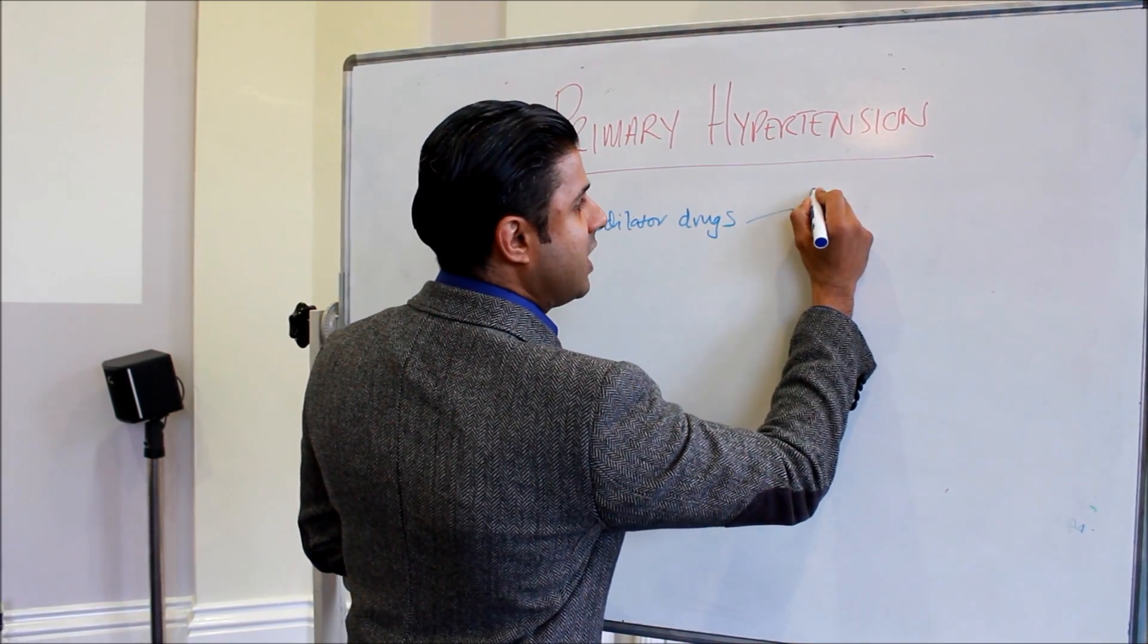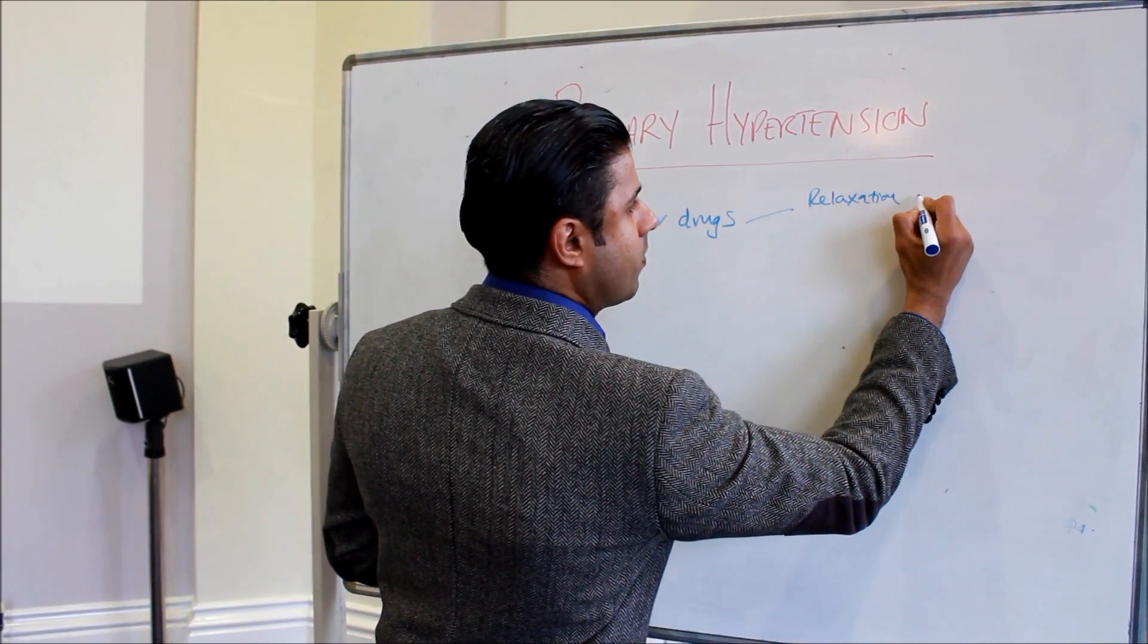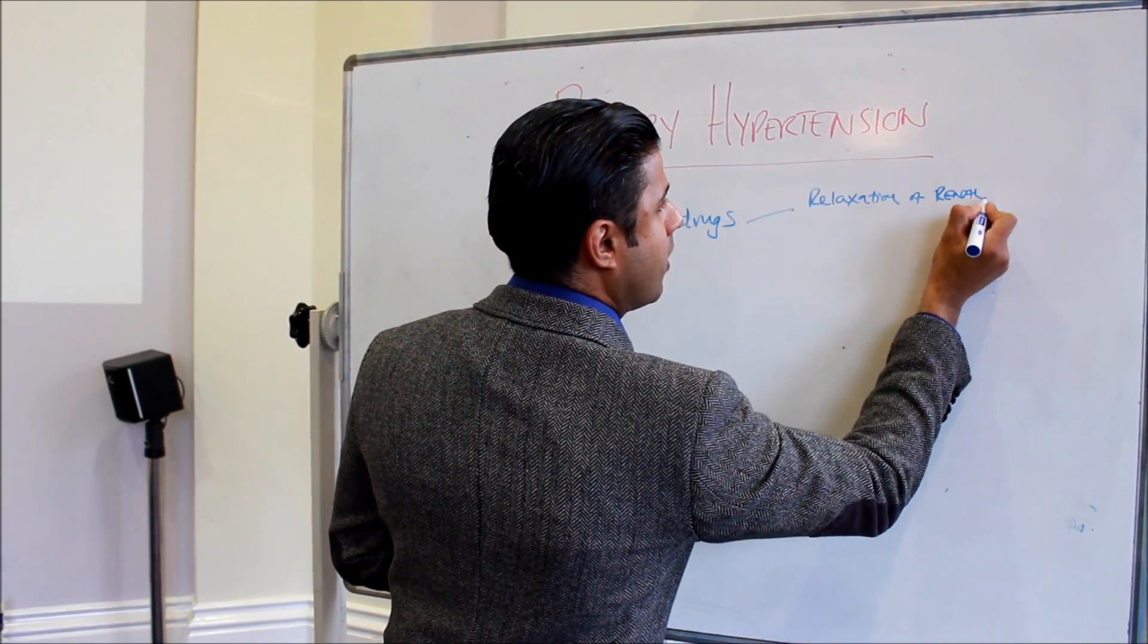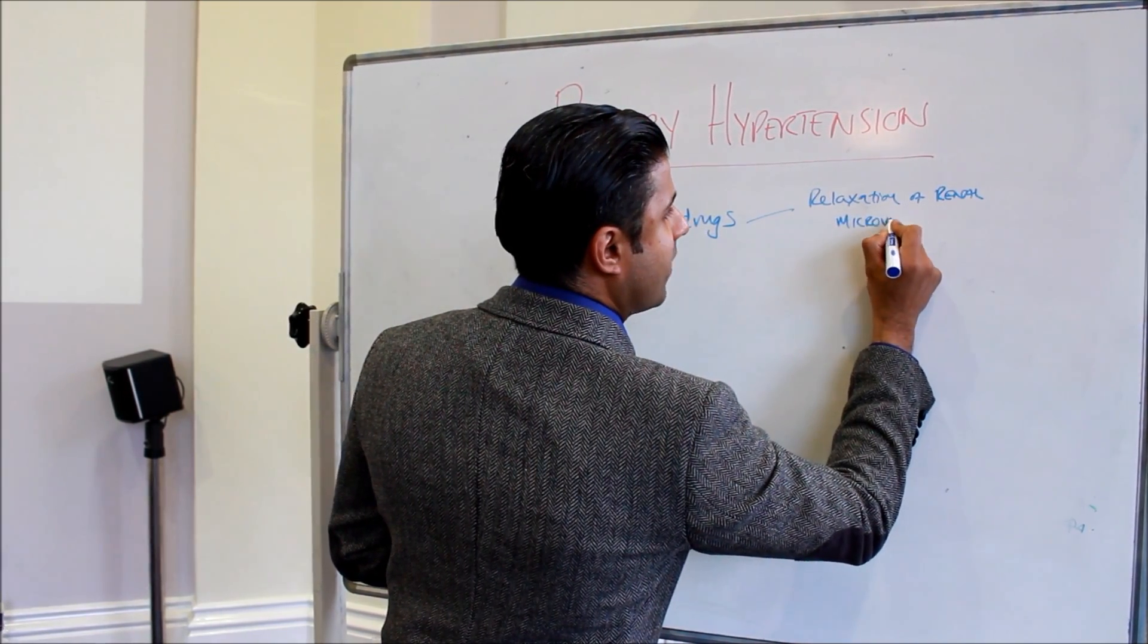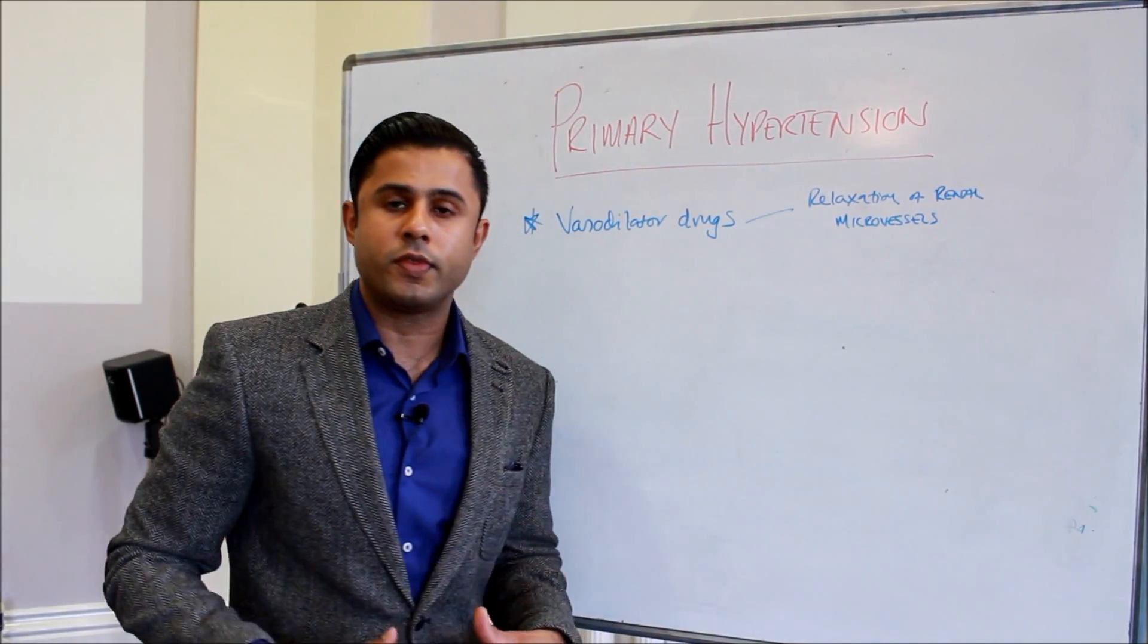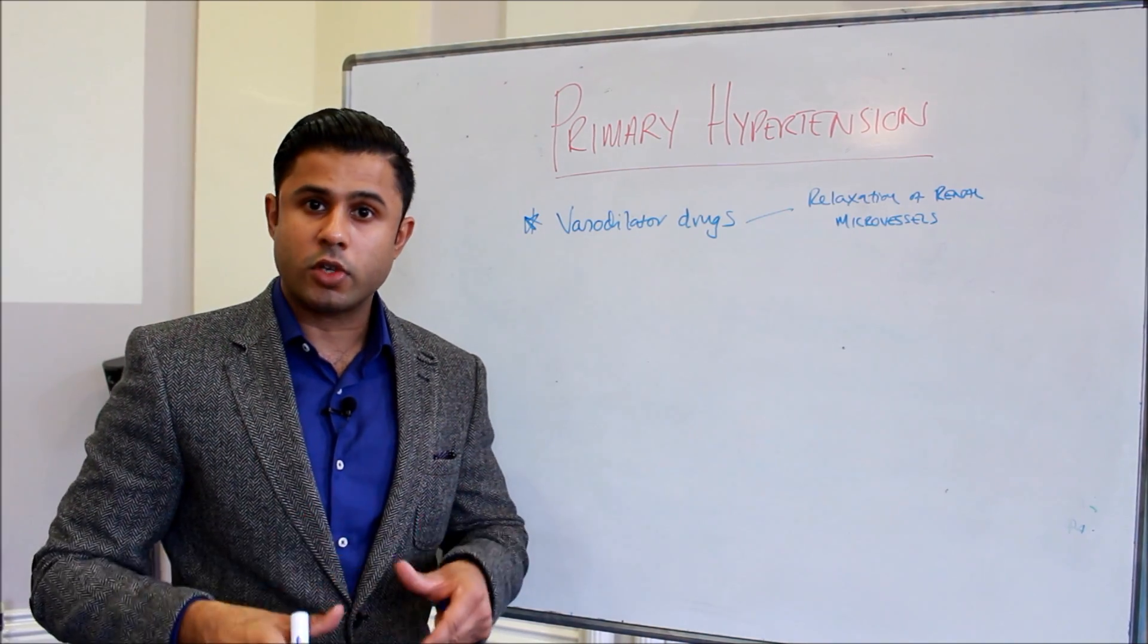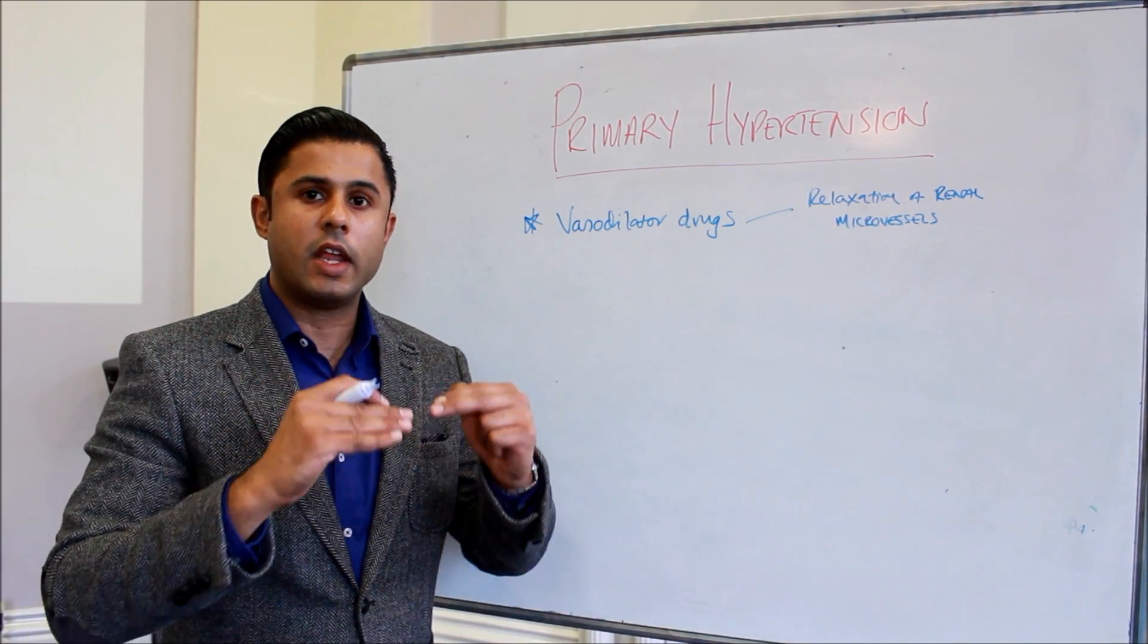Vasodilator drugs cause relaxation of renal microvessels, so the tiny little blood vessels in the renal circulation. This improves the excretion of water and salt from the kidneys, and you get a reduction in blood volume and a reduction in blood pressure.